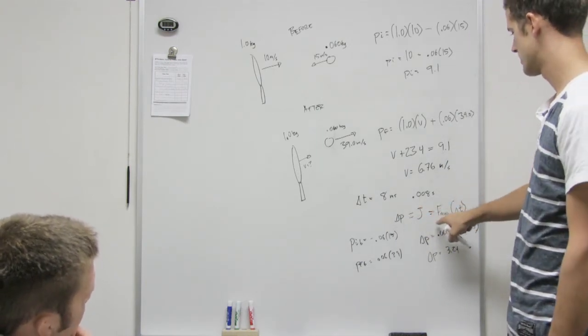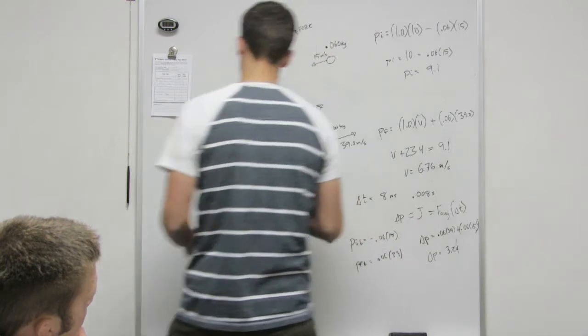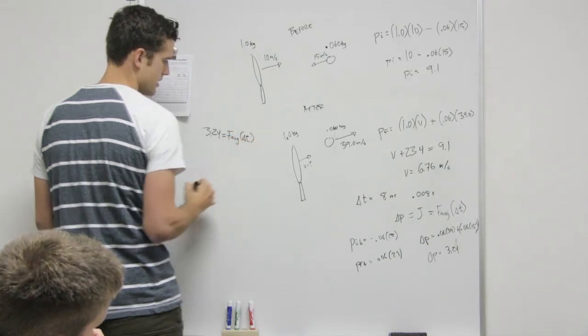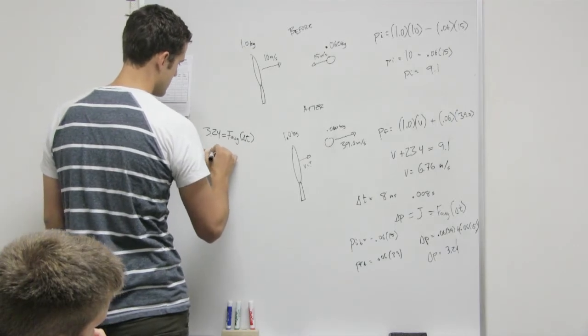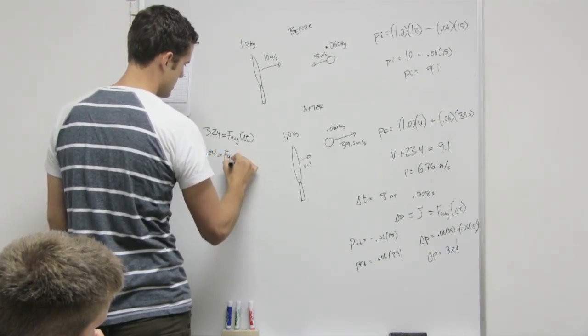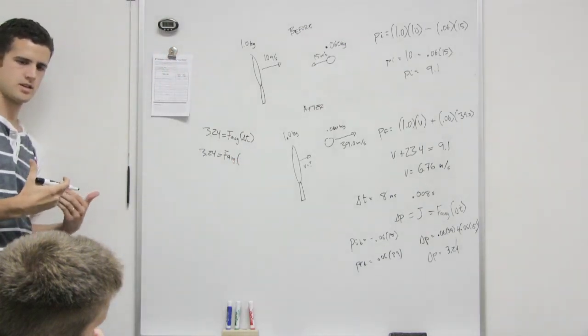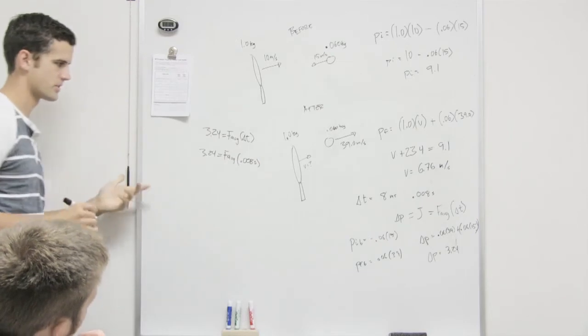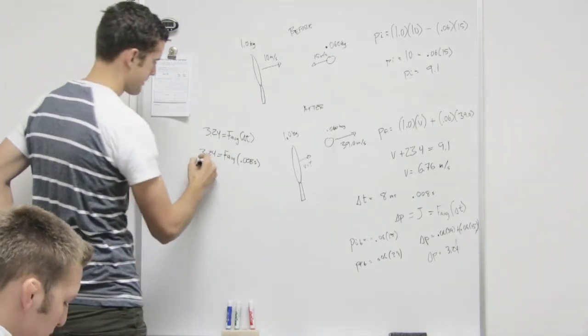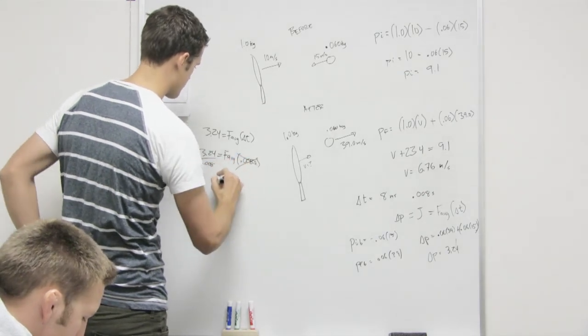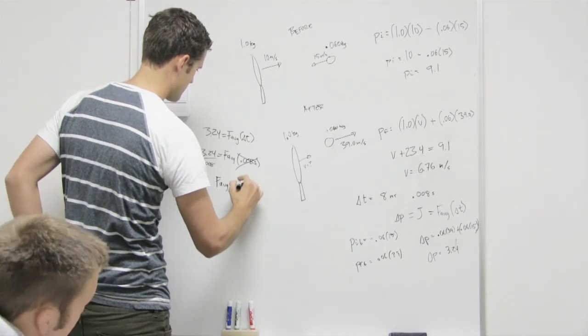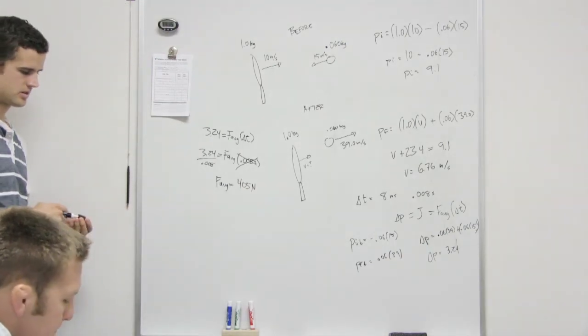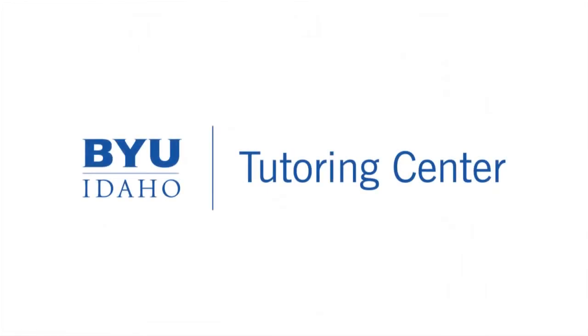Okay, so that is equal to J. That's equal to this. So now we have 3.24 was our change in momentum. That equals the average force times the change in time. So what was our change in time? How long are they in contact? 0.008. Yep. So just divide that over. 405. Or 405 Newtons. Okay. Thank you.